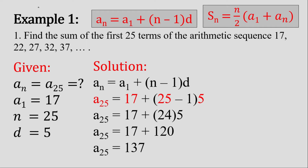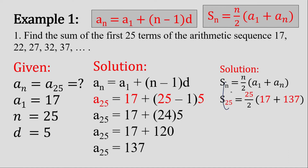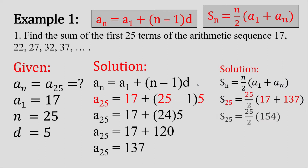Now we have a value for the 25th term and can solve the sum of the first 25 terms. We use the arithmetic series formula and substitute all the given values: 25 for n, 17 for a sub 1, and 137 for a sub n. We evaluate the equation — if it has big numbers, it is advisable to use a calculator. The sum of the first 25 terms is 1,925 for this specific sequence.